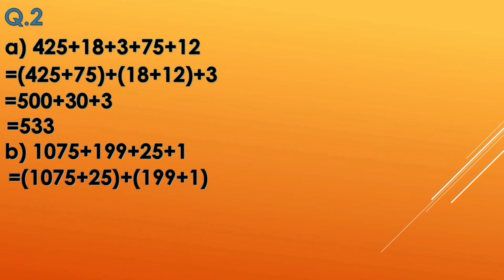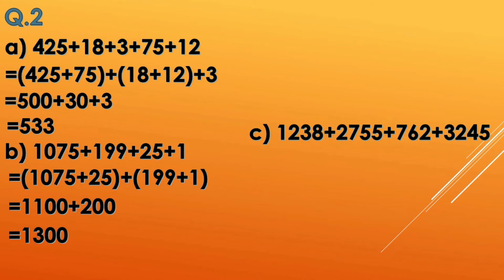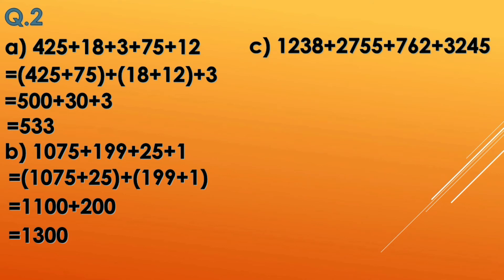In option b — 1075 plus 199 plus 25 plus 1 — we make a smart pair: 1075 plus 25 is one pair, and 199 plus 1 is another pair. So the total is 1100 plus 200, which equals 1300.